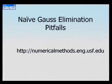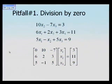In this segment, we'll talk about the pitfalls of the Naive Gaussian Elimination method, which is the method to solve simultaneous linear equations. Let's look at the first pitfall, which is division by zero.